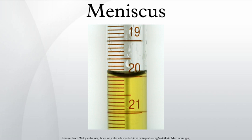The meniscus and measurement: when reading a depth scale on the side of an instrument filled with liquid, such as a water level device, the meniscus must be taken into account in order to obtain an accurate measurement. Depth must be measured with the meniscus at eye level and at the center of the meniscus — that is, the top of a convex meniscus or the bottom of a concave meniscus.